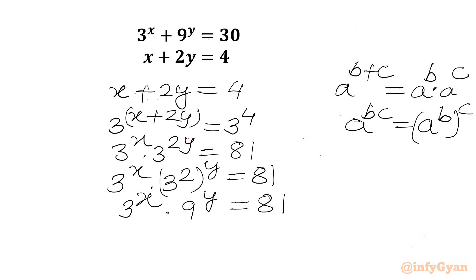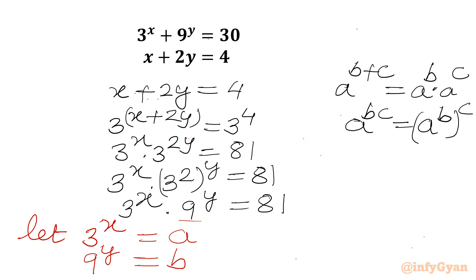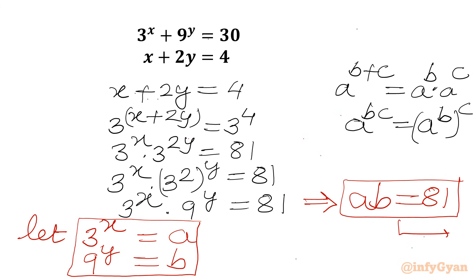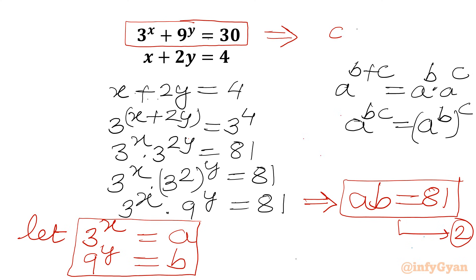Now we will use substitution. Let us consider 3^x = a and 9^y = b. After substitution, the second equation becomes a × b = 81, and the first equation becomes a + b = 30.